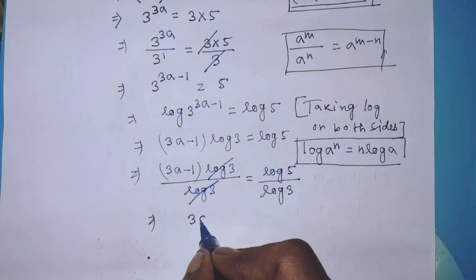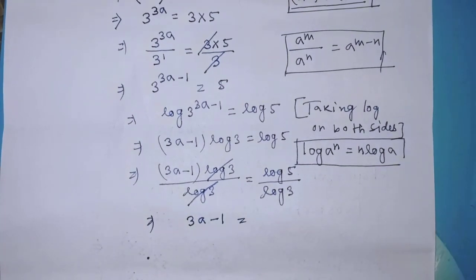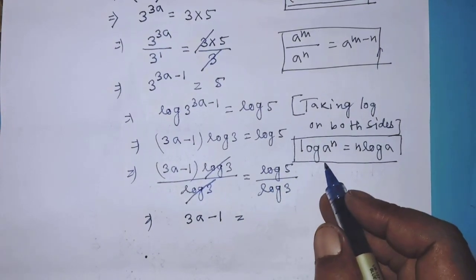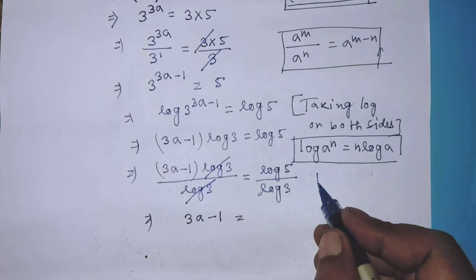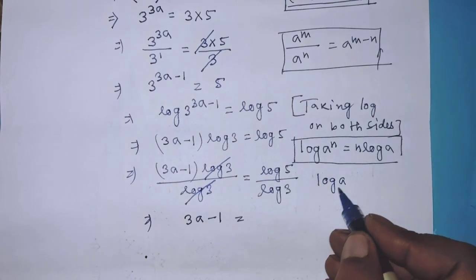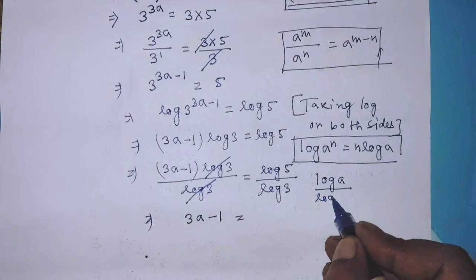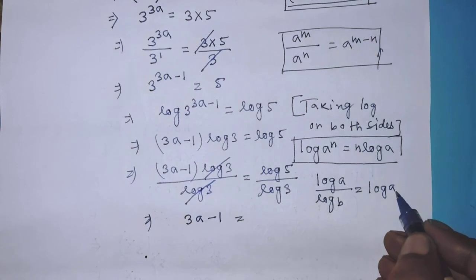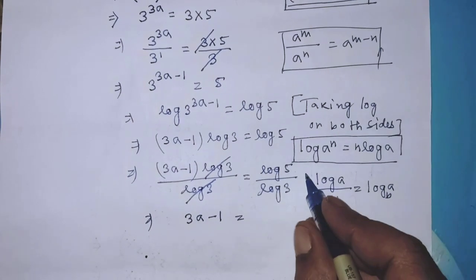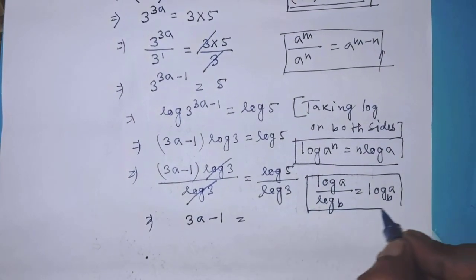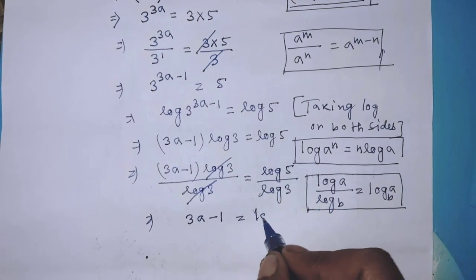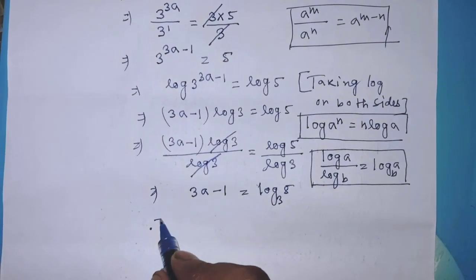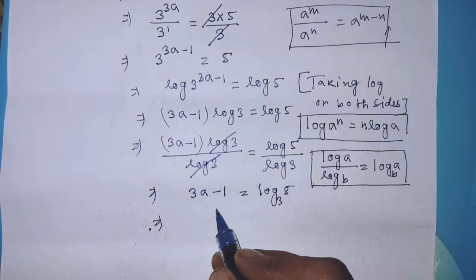Then it will be 3a minus 1 is equal to — to simplify this logarithmic form we apply the formula: log of a over log of b is equal to log of a to the base b. So according to this formula it will be log of 5 to the base 3.